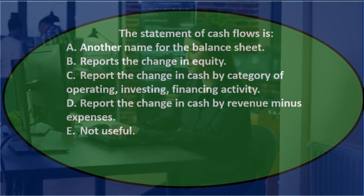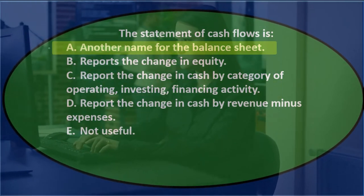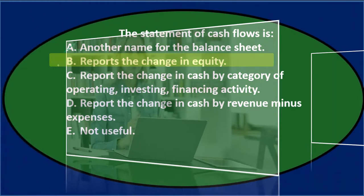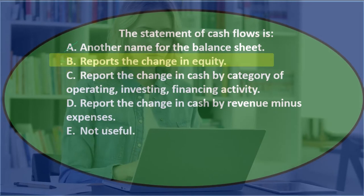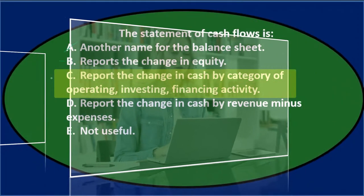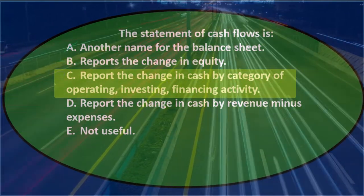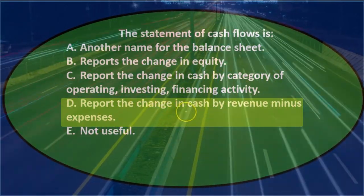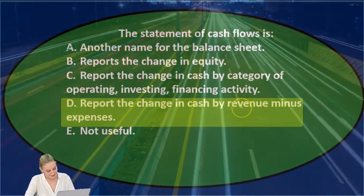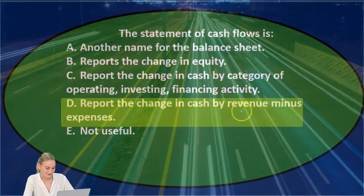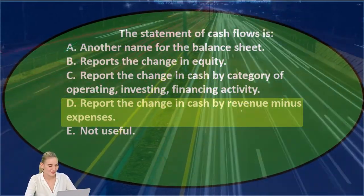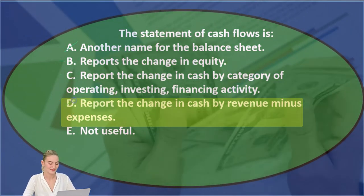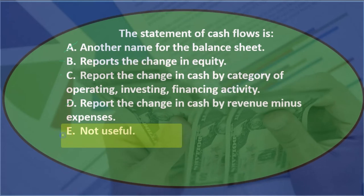The statement of cash flows is A. another name for the balance sheet — that's probably not the case, the statement of cash flows is different, so cross that out. B says reports the change in equity — it does involve change, but I don't think it's equity; I'll keep it for now. C says reports the change in cash by category of operating, investing, and financing activities — that sounds pretty reasonable. D says reports the change in cash by revenue minus expenses. That's a little tricky because it mentions change in cash, but revenue minus expenses is net income, which is accrual-based — not cash flow. So it's not D. E says not useful — we hope it's useful, so it's not E.